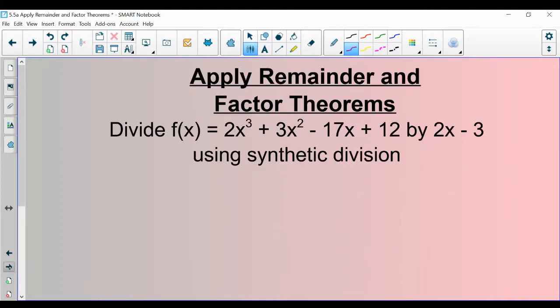Let's try another. So here we have 2x to the third plus 3x squared minus 17x plus 12. That's being divided by 2x minus 3. We need to figure out what makes 2x minus 3 equal to 0. If we're not sure, we can set it equal to 0, add 3, and then divide by 2. You would get 1.5 or 3 halves.